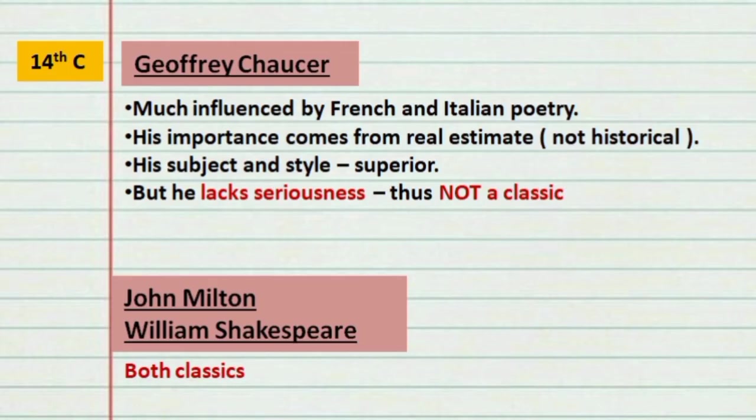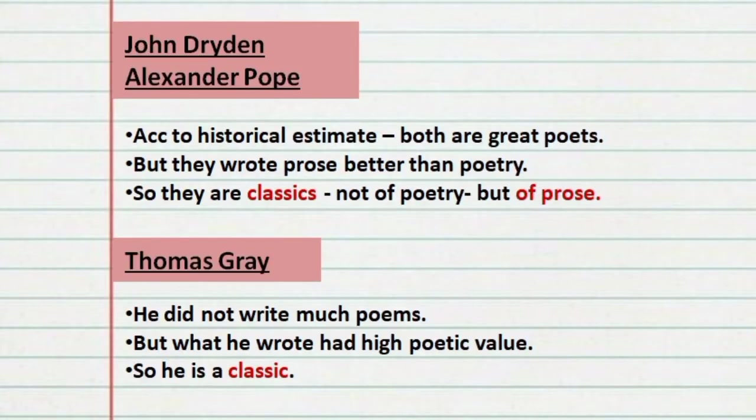John Milton and William Shakespeare are both considered classics by Arnold. From the 18th century, John Dryden and Alexander Pope's poems are important because of historic estimate — though their poetry was not so great, they wrote very good prose, so Arnold thinks of them as classics of prose. Regarding Thomas Gray, even though he did not write many poems, the few he wrote were of high value, and thus he is considered a classic.